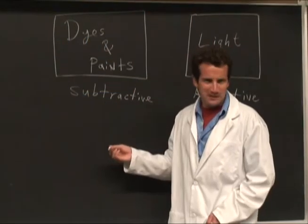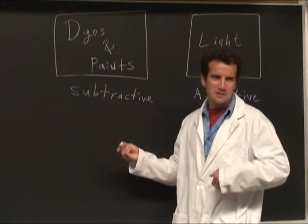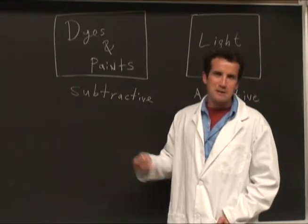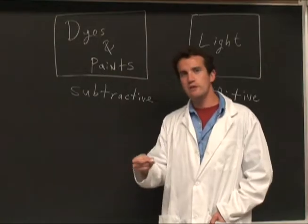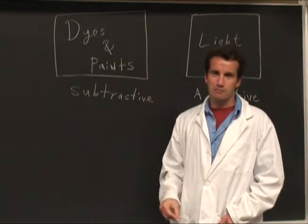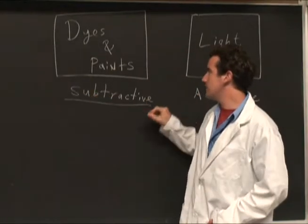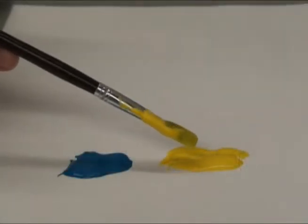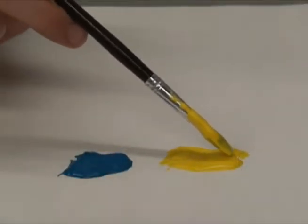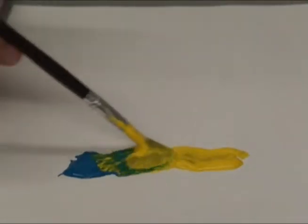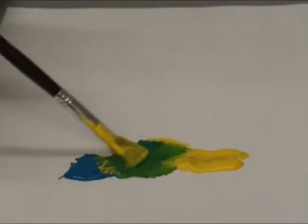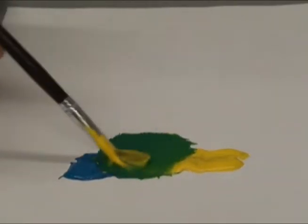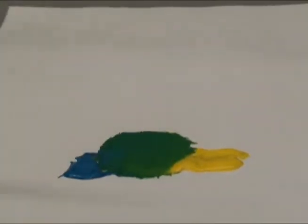Dyes and paints are subtractive — they prevent light from being reflected. For example, red paint would prevent blue and green light from being reflected and only reflect red. Subtractive. Mixing blue and yellow reflects less blue and less yellow, and no red. The result is green.